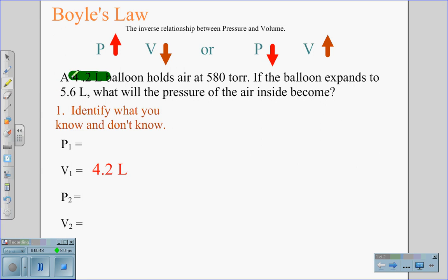We also see that we have 580 torr. So our original pressure, P1, is 580 torr. The balloon expands to 5.6 liters. Therefore, our new volume is 5.6 liters, and we are looking for the new pressure.